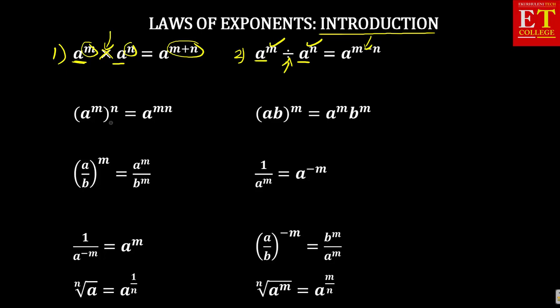The next law is: when there is an exponent a to the power n, multiplied with another exponent m, what you simply do is multiply the exponents. For example, if I'm given 2 squared with a 3, so what I'm having is 2 to the power 2 times 3, which is equal to 2 to the power of 6. That's what that law is saying.